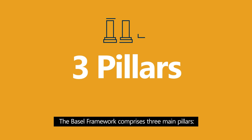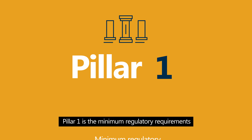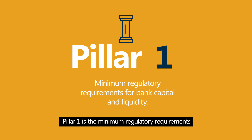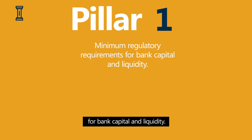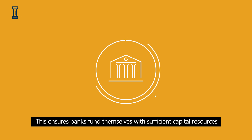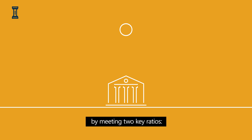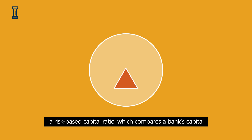The Basel Framework comprises three main pillars. Pillar one is the minimum regulatory requirements for bank capital and liquidity. This ensures banks fund themselves with sufficient capital resources by meeting two key ratios.